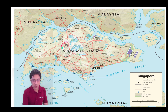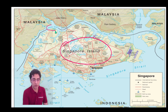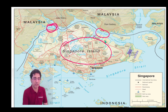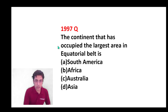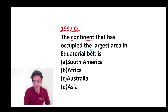This is Singapore. One very important thing to remember is that it is separated from Malaysia by the Johor Strait. This is the Johor Strait — it can be a question any time in the exam. Also, look at this question from 1997: the continent that occupies the largest area in the equatorial belt is Africa.